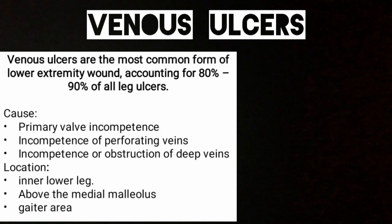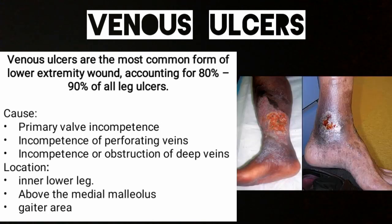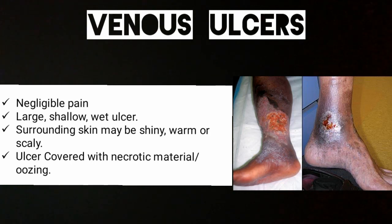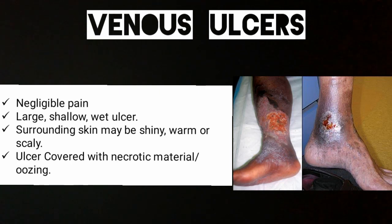The location of venous ulcers can be the inner lower leg above the medial malleolus, and the gaiter area — the entire area from the medial malleolus upward is called the gaiter area. Clinically, the patient will have negligible pain, so compared to arterial ulcers there is little pain. The ulcer is larger in size, shallow, and wet — we call it a wet ulcer because there is pus formation. The ulcer is covered with necrotic material and oozing can be seen. The surrounding skin may be shiny, warm, or scaly, making them very easy to distinguish from arterial ulcers.